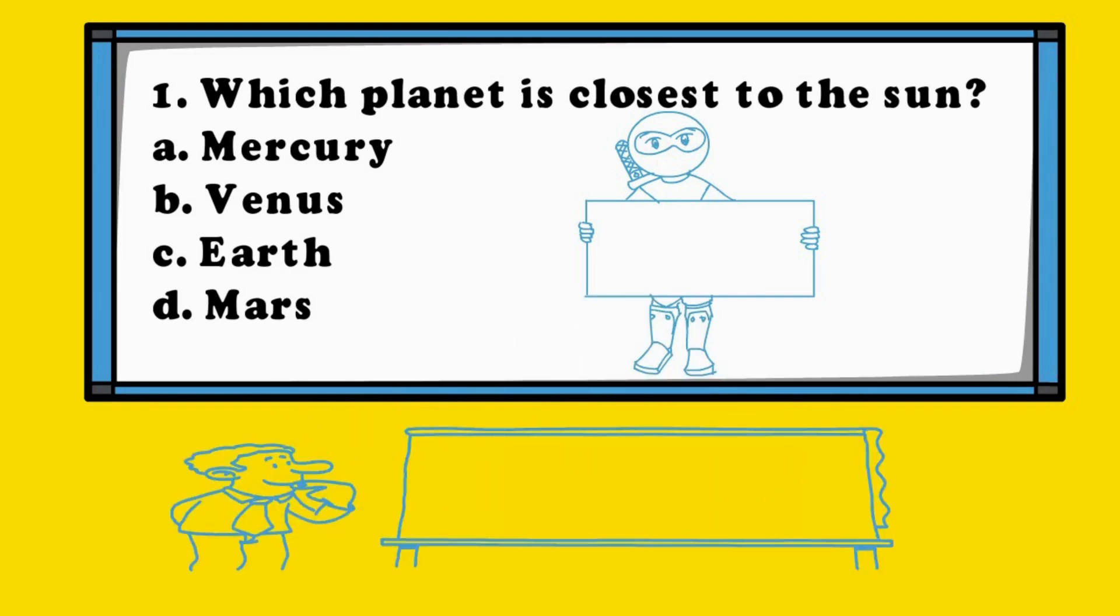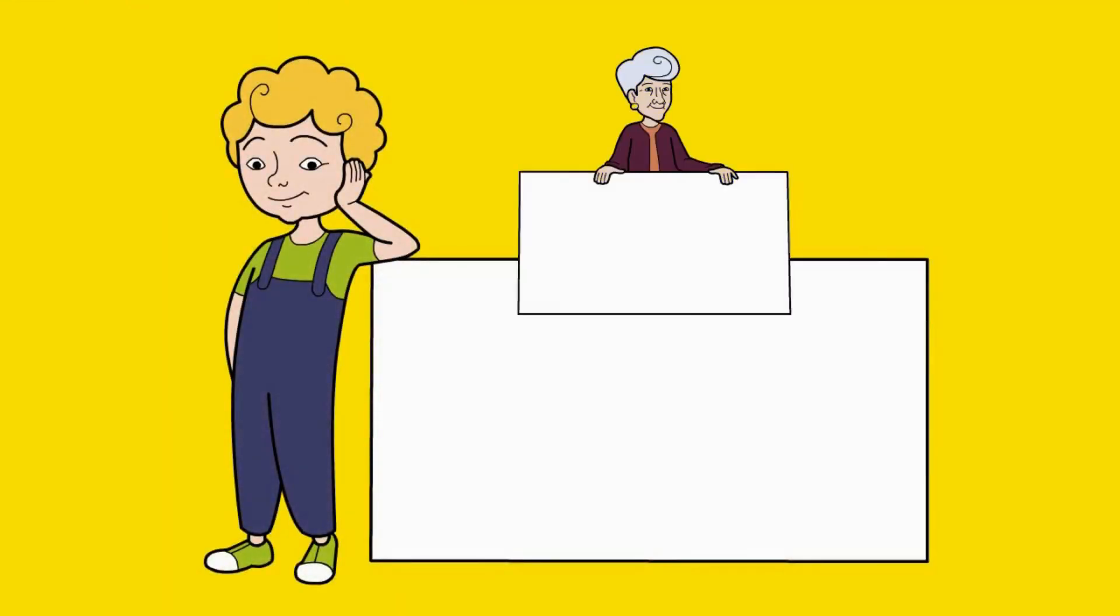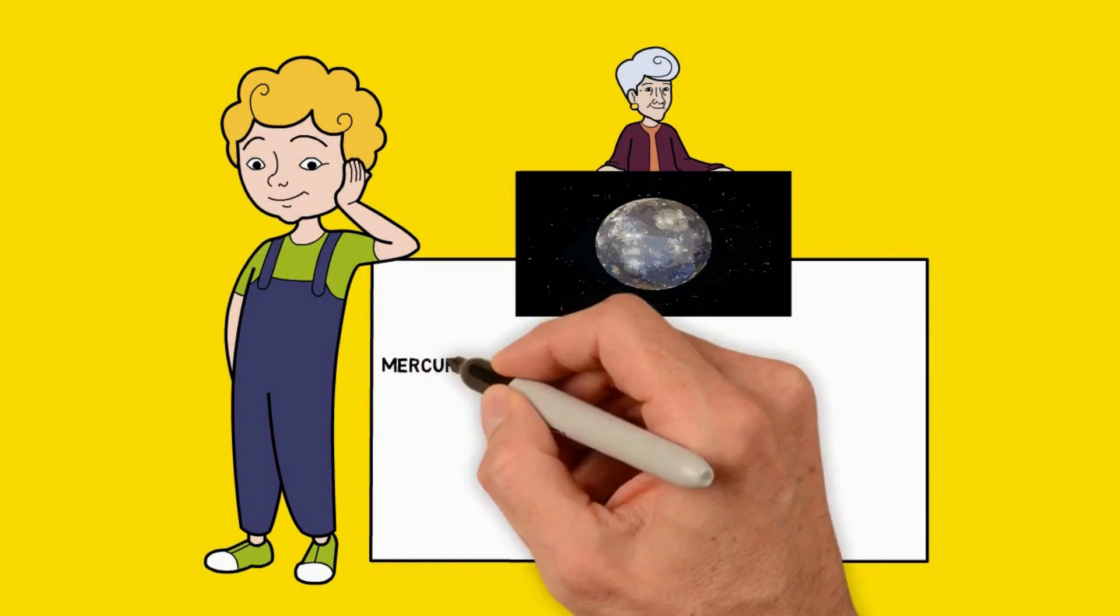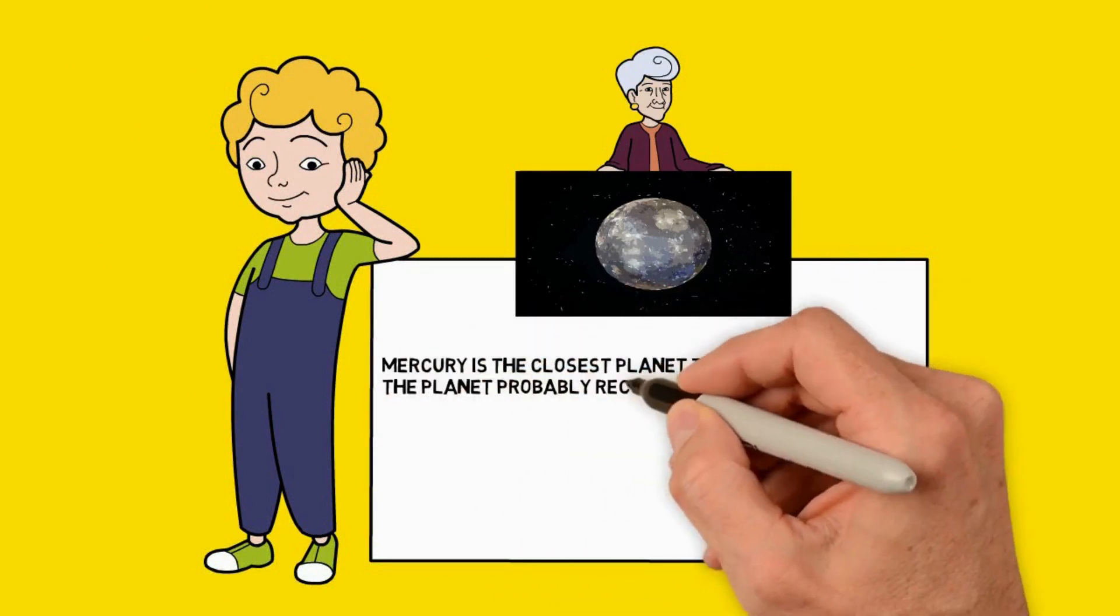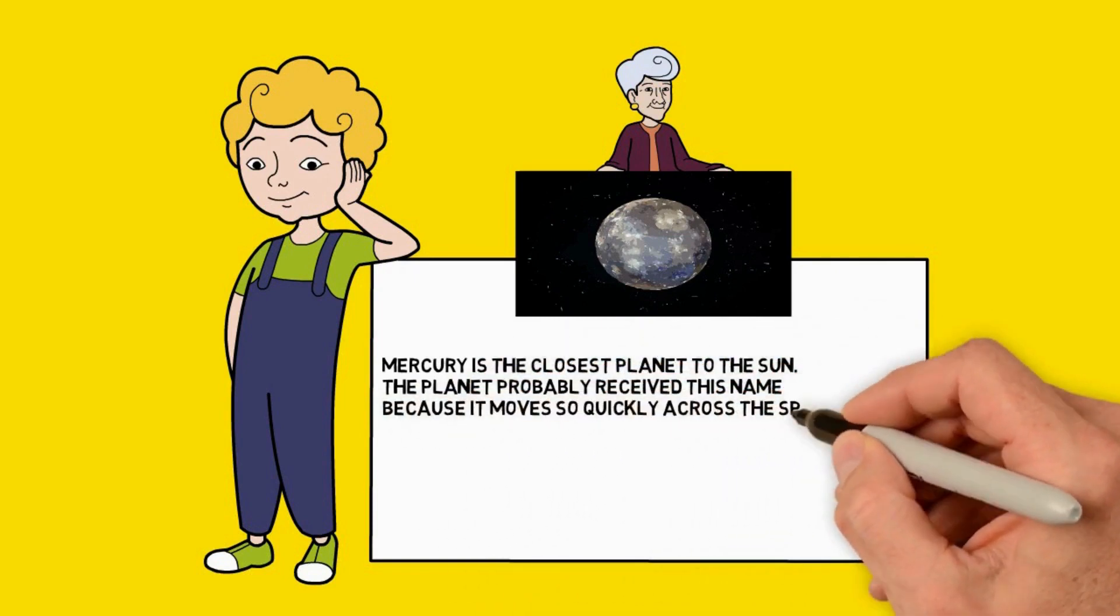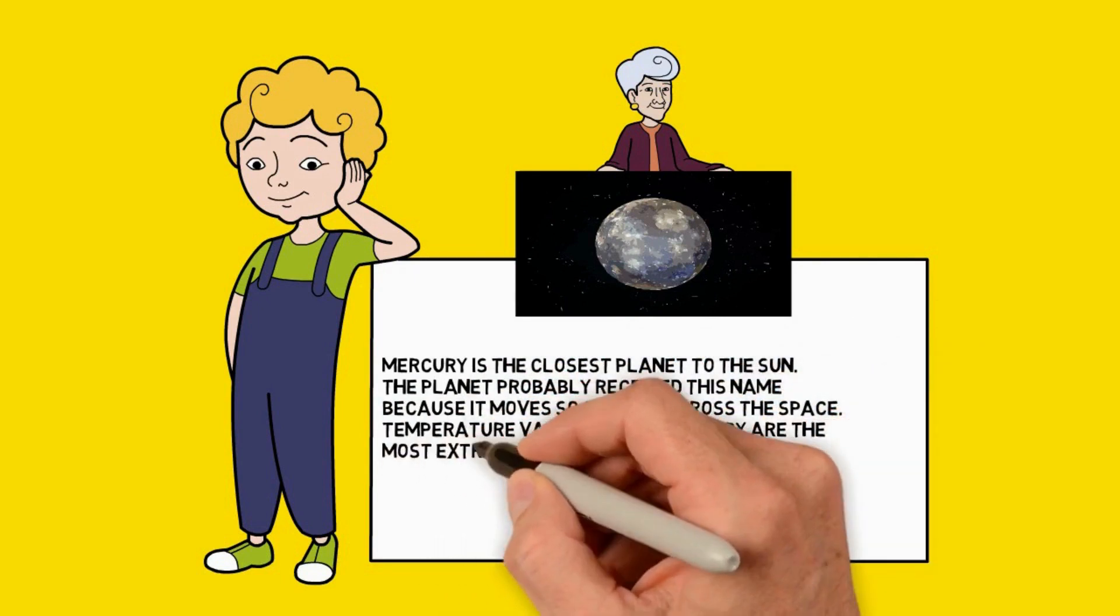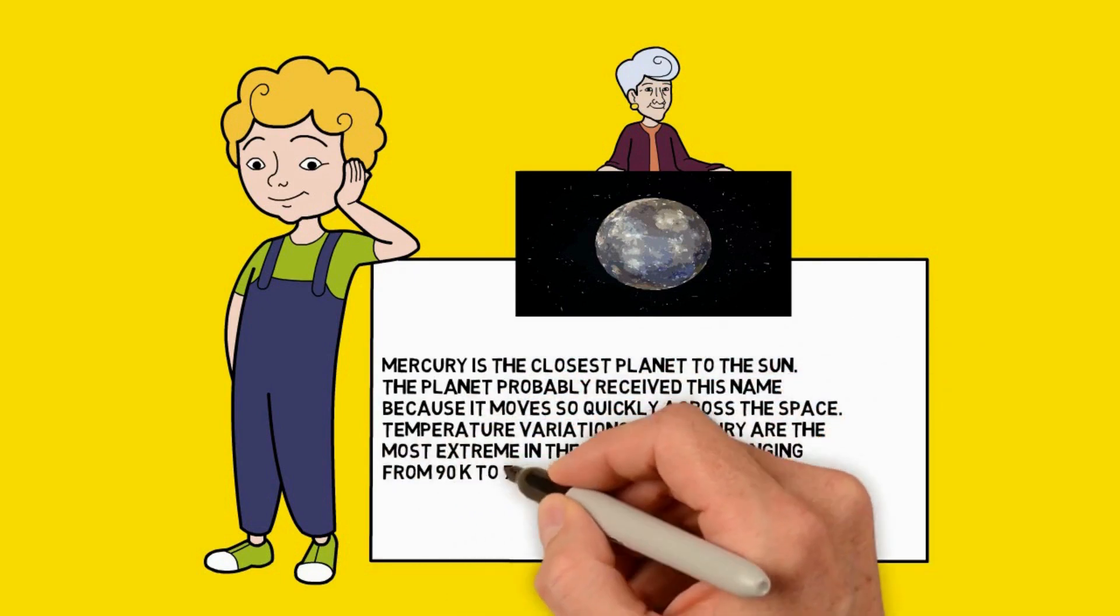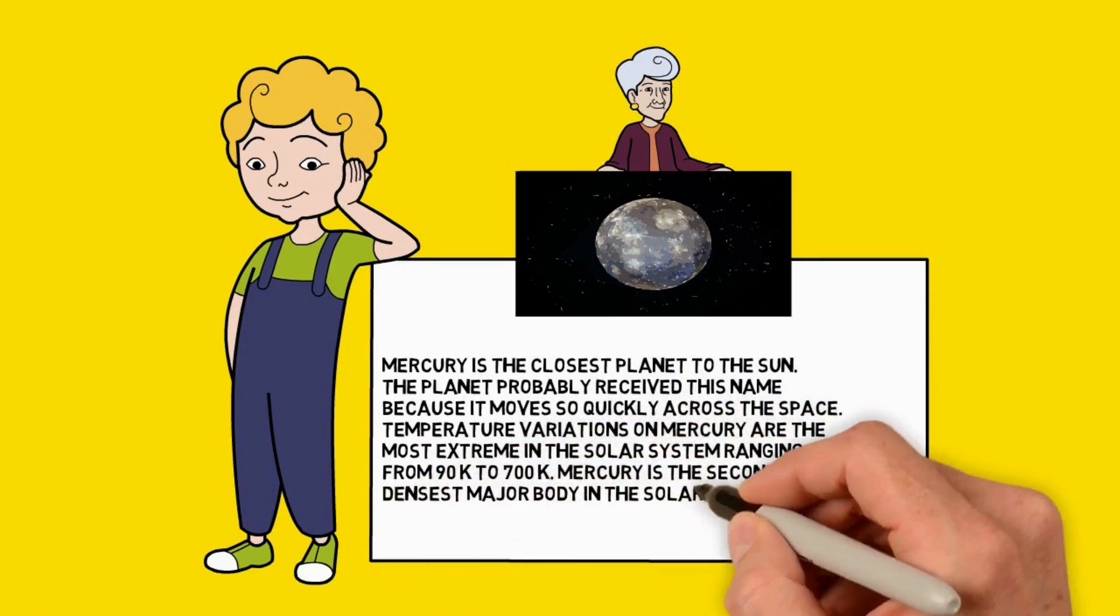The answer is A. Mercury. Mercury is the closest planet to the Sun. The planet probably received this name because it moves so quickly across the space. Temperature variations on Mercury are the most extreme in the solar system ranging from 90k to 700k. Mercury is the second densest major body in the solar system after Earth.